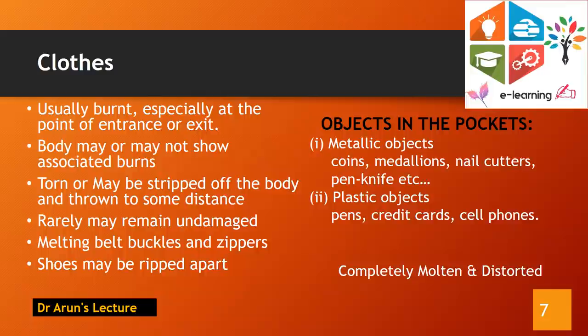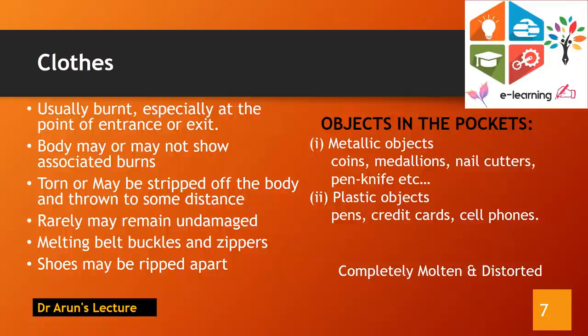On external examination, clothes worn by the individual may be burnt completely or partially. The maximum burn is noted at the point of entry or exit of the lightning injury. As a result of burns on the clothes, the underlying body part may or may not show associated burns. In extreme degrees of lightning injury, clothes may be completely stripped off, and rarely remain undamaged. The metallic buckles, belt buckles, and zippers of the clothes may show features of melting.